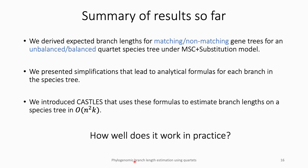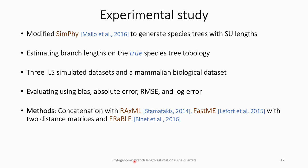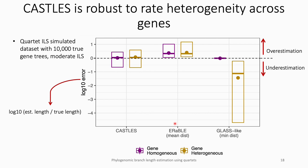Now we will see some empirical results. For our experimental study, we modified the simulation tool SIMPTI to generate ground-truth species trees and gene trees with substitution unit branch lengths. We used different methods to estimate branch lengths on a true species tree topology and compared them using several error measures across multiple datasets. Here we see a comparison on a quartet simulated dataset with true gene trees between three methods: CASEL, ARABLE — which computes a weighted average across gene tree branch lengths — and a glass-like method that takes the minimum across gene tree branch lengths.